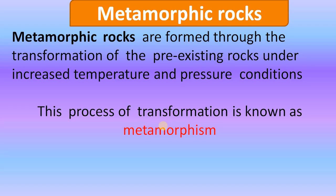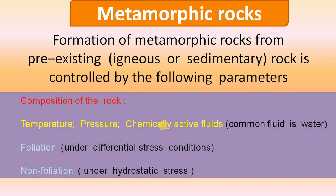Coming to metamorphic rocks, these are formed through the transformation of pre-existing rocks — that is, igneous rocks as well as sedimentary rocks — under increased temperature and pressure conditions. This process of transformation is known as metamorphism. The formation of metamorphic rocks is controlled by a few parameters: the composition of the rock, the temperature conditions, the pressure conditions, and chemically active fluids.